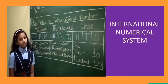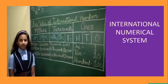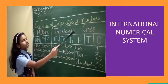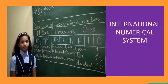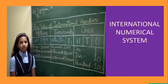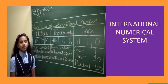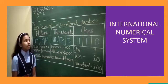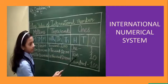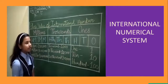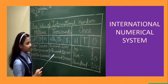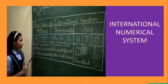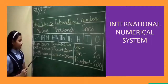Hi everyone. My name is Dikshya Sayan from class 4C. Today I am going to represent the place value of the international number system. There are three periods in the international number system: ones period, thousands period, and millions period. In the ones period, there are ones, tens, and hundreds. In the thousands period, there are thousands, ten-thousands, and hundred-thousands. In the millions period, there are millions, ten millions, and hundred millions.